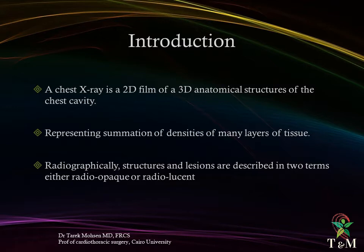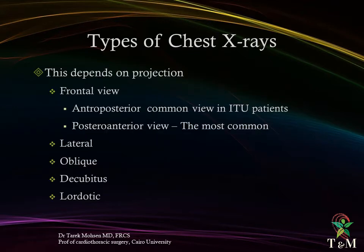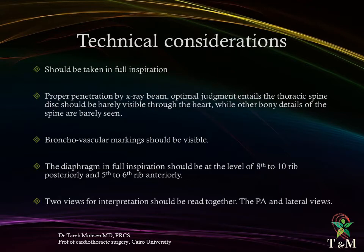Radiologically, structures and regions are described in two terms: either radio-opaque or radio-lucent. Types of chest x-rays depend on projection of the x-ray beam. Frontal views include the classical posterior-anterior view, which is the most common, and the anterior-posterior view, common in bedridden patients. Other views include the lateral, oblique, decubitus, and laudatic views.